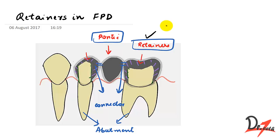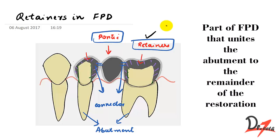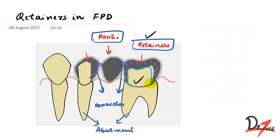By the definition of GPT-8, a retainer is a part of the FPD that unites the abutment to the remainder of the restoration. So the retainer helps join the abutment tooth with the rest of the FPD. It is used for stabilization or retention of the prosthesis — we cement the retainer to the abutment, fixing it to the tooth and helping to stabilize the prosthesis.